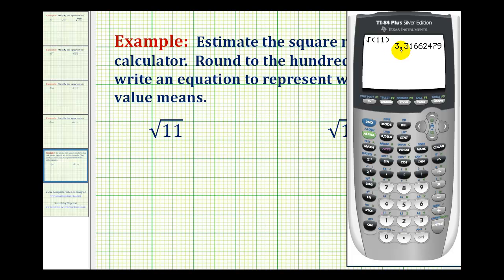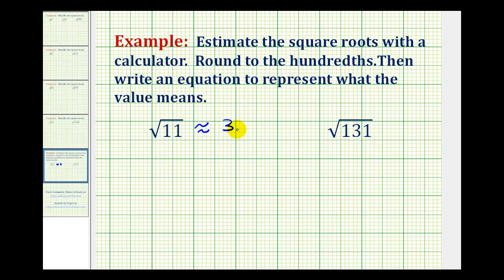So this is going to be approximately 3.32 rounded to the hundredths. When determining a square root, we're looking for a number that's squared that's equal to the radicand, or in this case, what number squared is equal to 11.